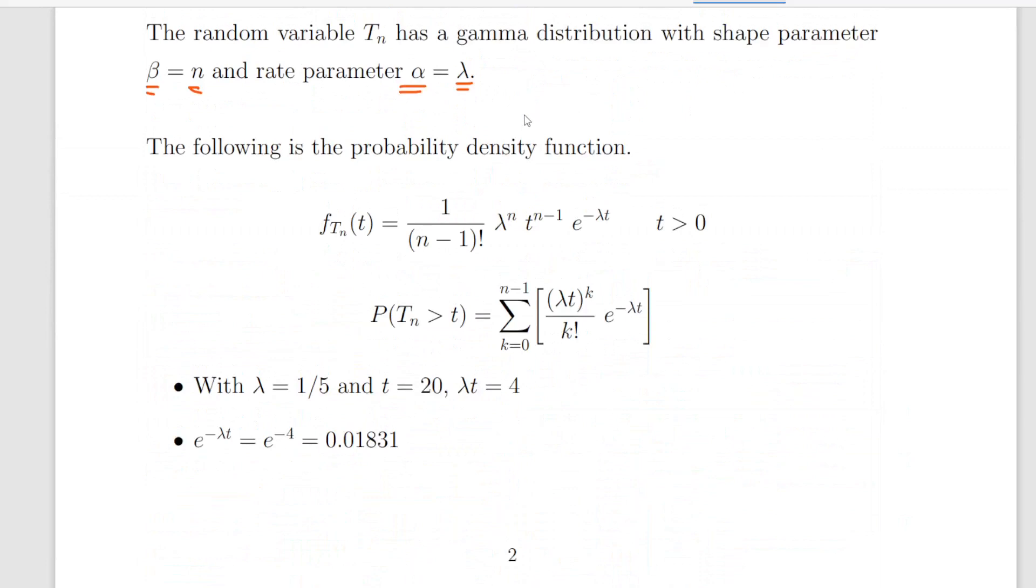So from now on, n equals 5 and lambda equals 1/5. Our shape parameter n equals 5 and our rate parameter equals 1/5.